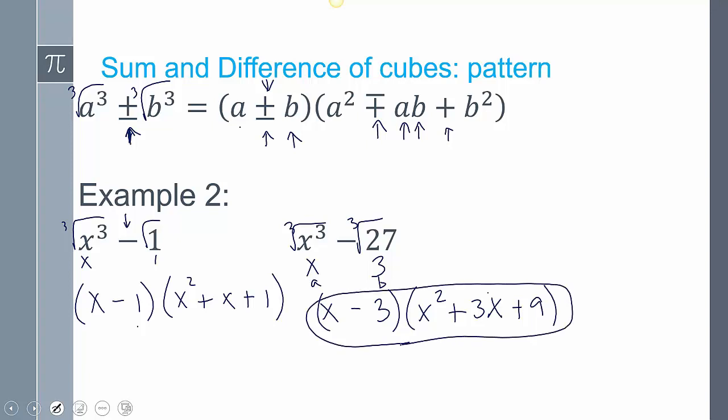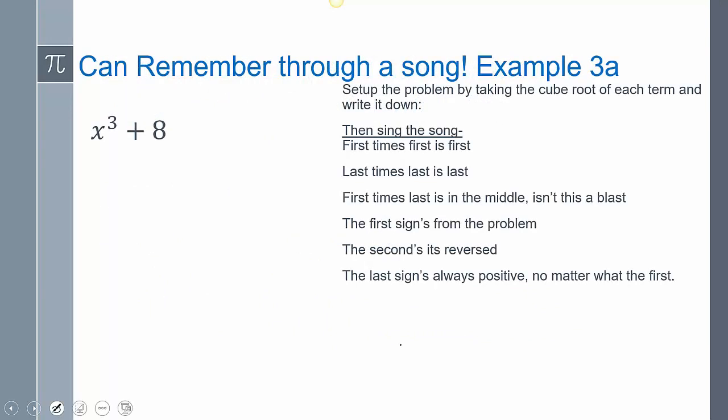Now, if you memorize it this way, great. If you will have trouble memorizing it, if you struggle with that, I have a song. And it's beautiful. And it will help us with it. And so, this part here is the song. And you just have to set it up just a little bit. And the way you set it up is you just take the cube root of that, x, the cube root of that value, 2. And then you can start singing the song.